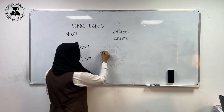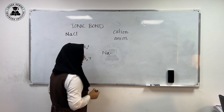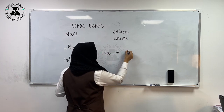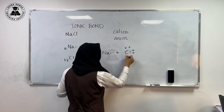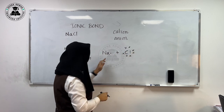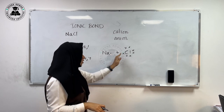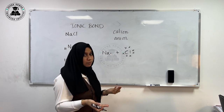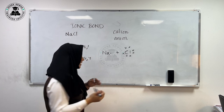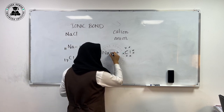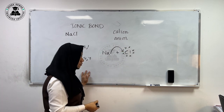We represent the outer electron in sodium by a dot and the outer electrons of chlorine by a cross. This is known as a cross and dot diagram. Sodium doesn't need this electron, whereas chlorine needs one more. So they will undergo a mutual transfer, and sodium will donate or give this electron to chlorine.